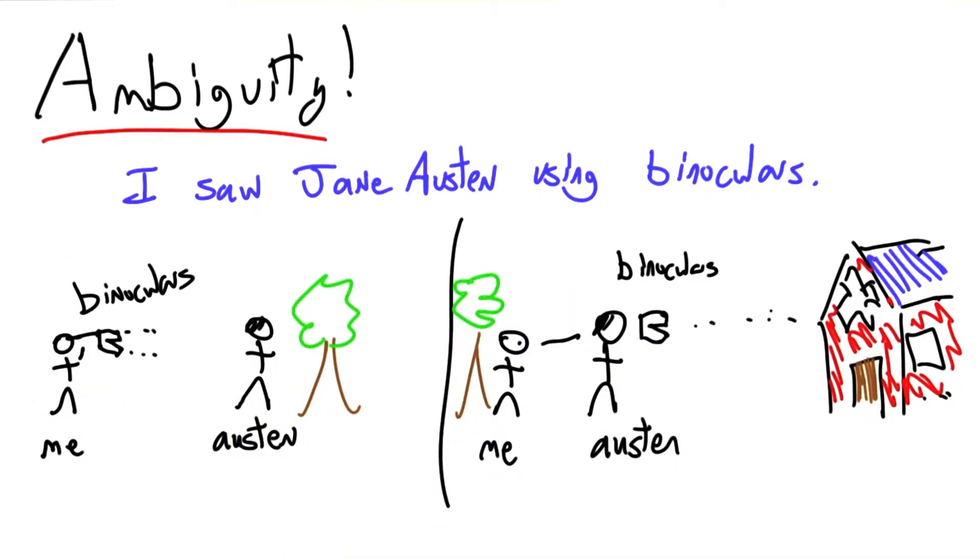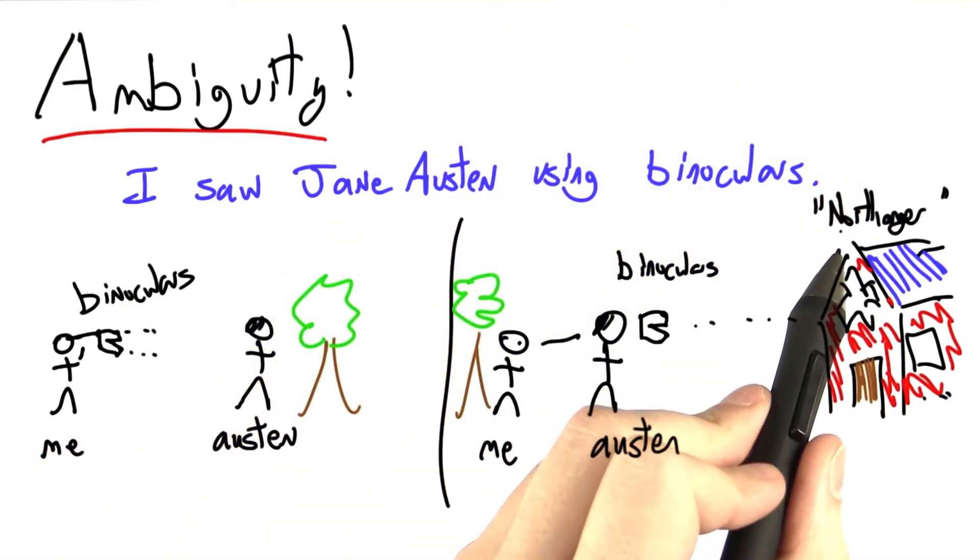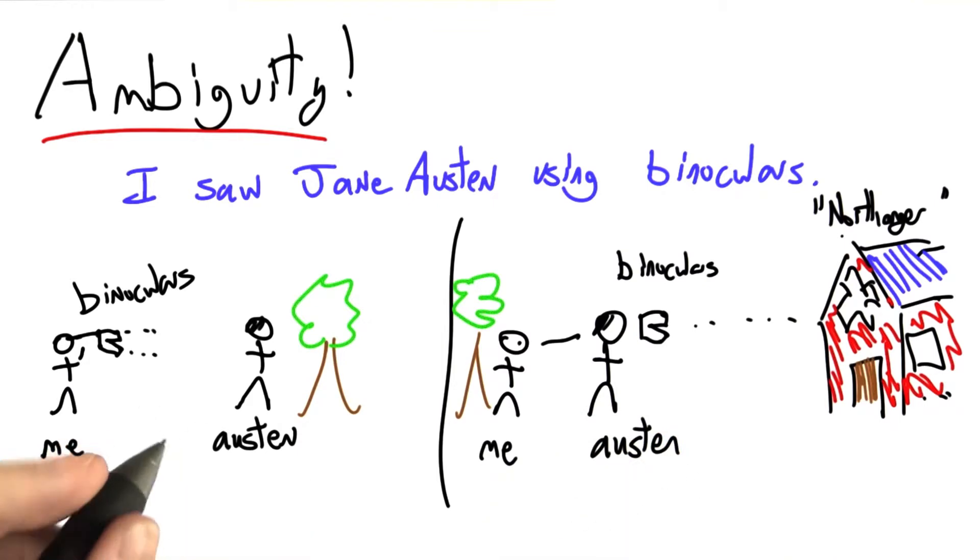Let's call it Northanger Abbey. Actually, it looks a bit more like a barn that was badly painted, but let's imagine. So both of these interpretations are correct, or the sentence is ambiguous.